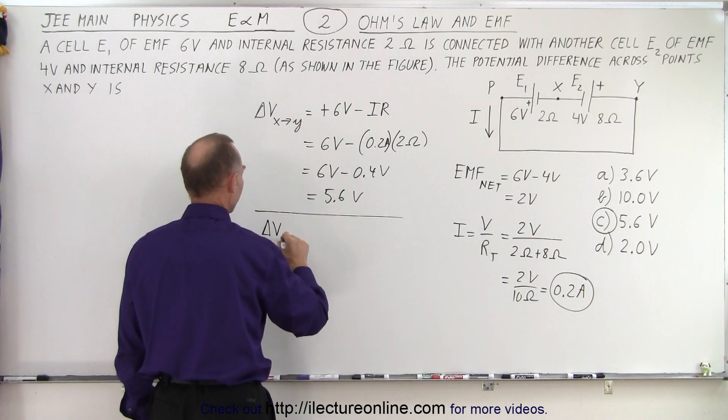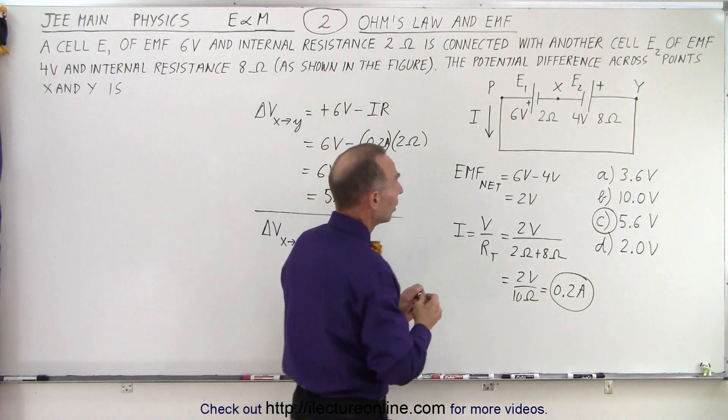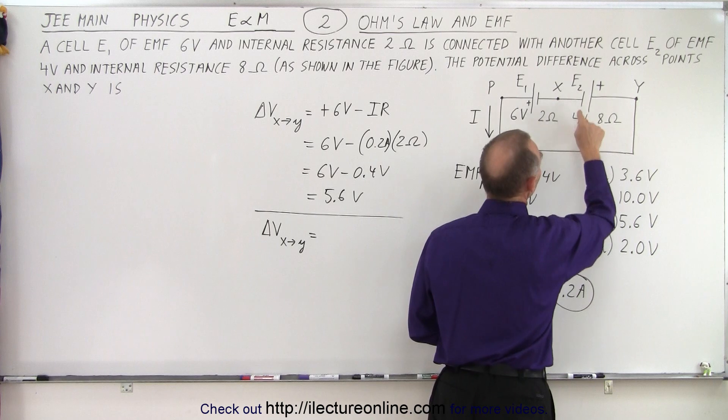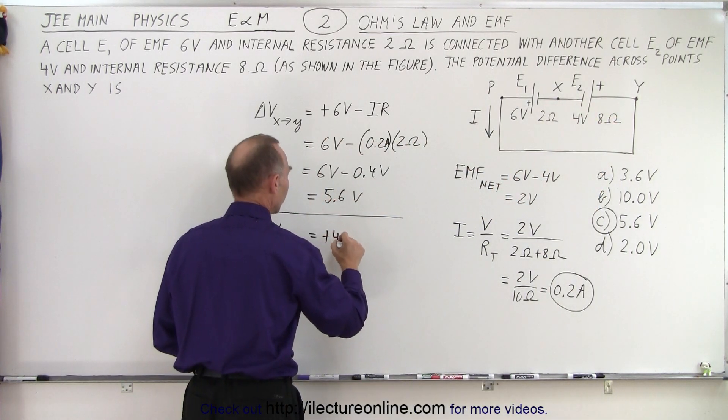So the change in voltage going from X to Y but now we go in the opposite direction. Notice we go from here to here, we gain 4 volts by going across this battery from the left to the right side, so we end up with plus 4 volts.